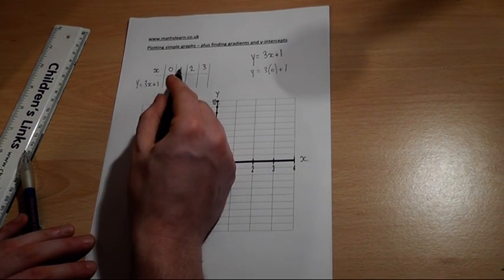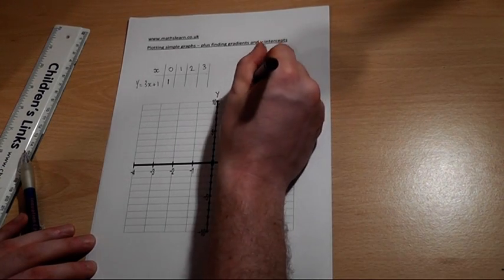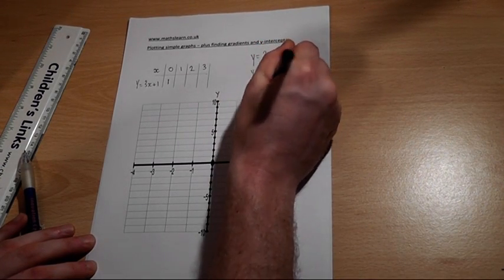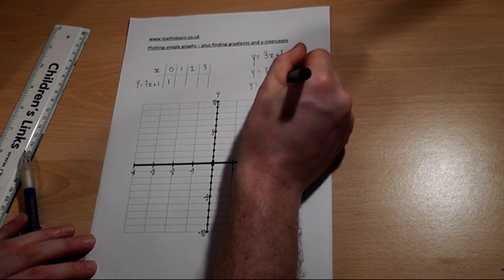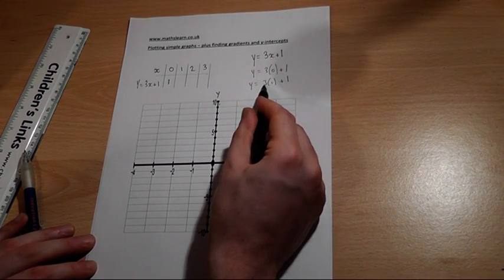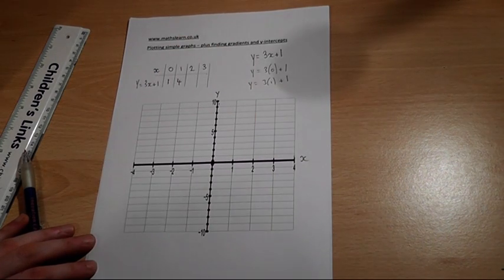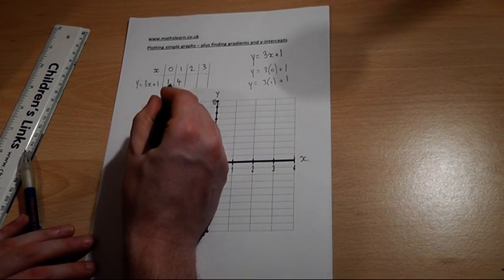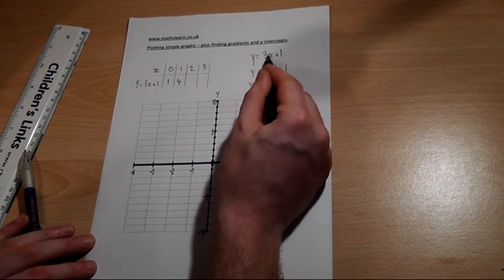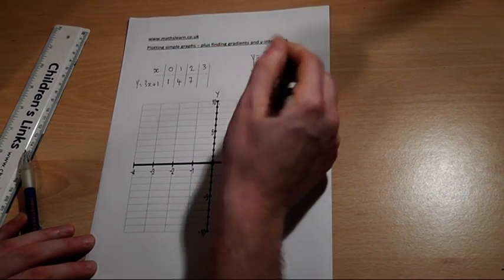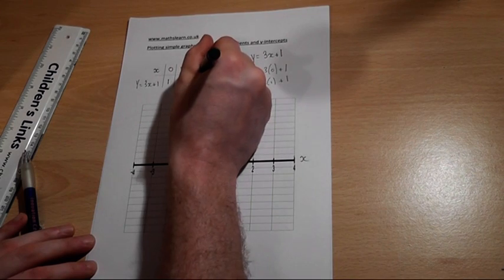When x equals 1, y will equal 3 times 1 plus 1. 3 times 1 is 3 plus 1 equals 4. If we keep on going we're going to get 1, 4. 3 times 2 plus 1 is 7. 3 times 3 plus 1 is 10.